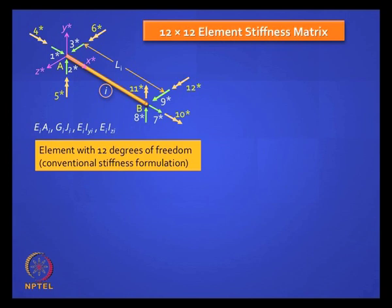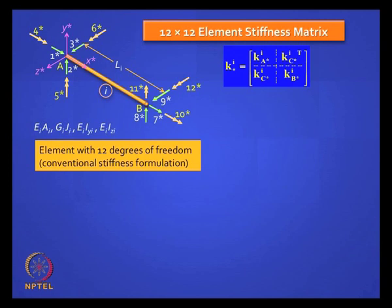That 12×12 element stiffness matrix is too big to show in one picture, so we break it into parts. The element stiffness matrix is symmetric and we partition it into four 6×6 compartments. You really have only K_A*, K_B*, and K_C*, because the off-diagonal quadrant is the transpose of K_C*.